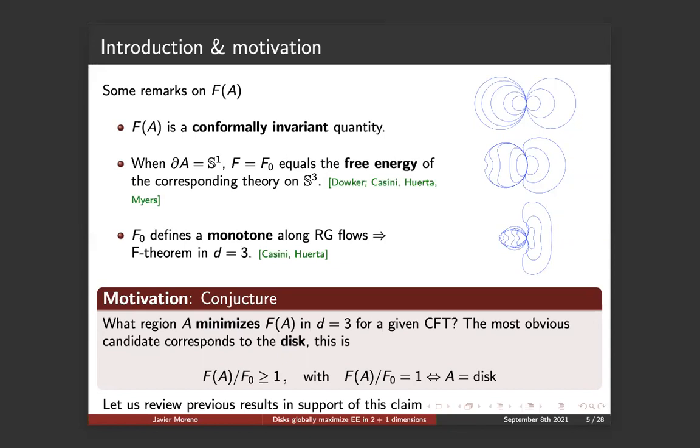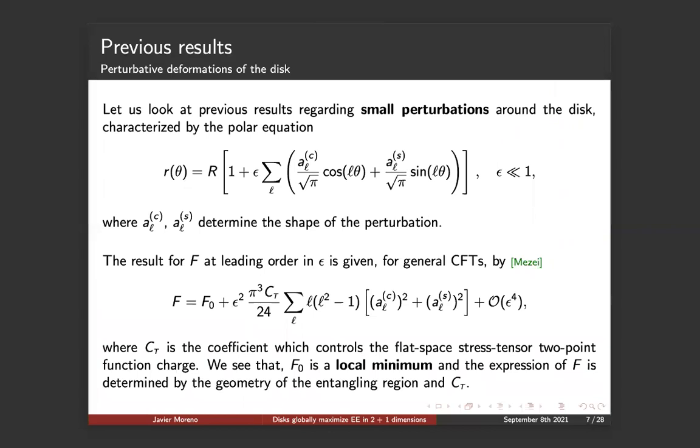Let us review some previous results that support this claim. The first comes from a work by Messe in which he considered small perturbations around the disk. He characterized these perturbations with a polar equation as an expansion of sines and cosines, and the coefficients determine the shape of the perturbation. What he found is that at leading order in epsilon for general CFTs, you get the piece corresponding to the disk entangling region plus some corrections starting at epsilon square that are controlled by the flat space stress tensor two-point function charge. The first order in epsilon is absent, representing that this should correspond to an extremum, or in this case, because of the sign of epsilon square, it should be a local minimum.